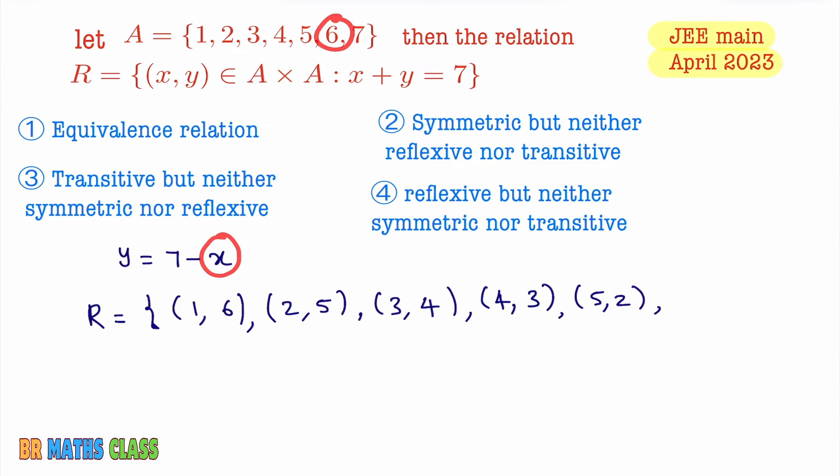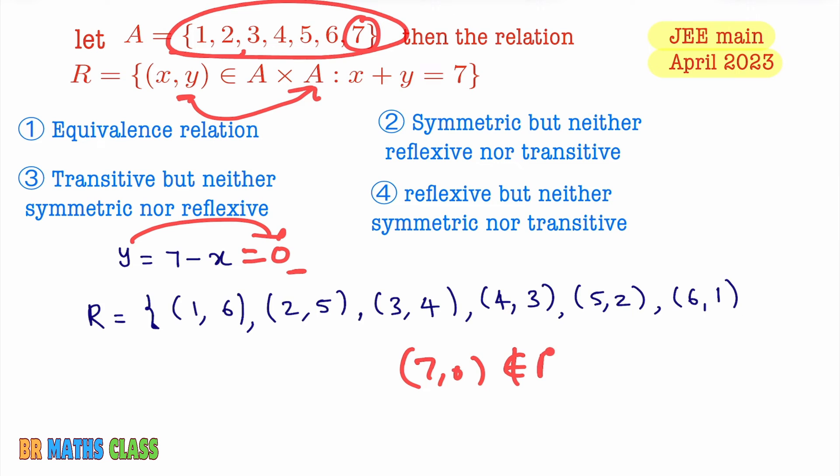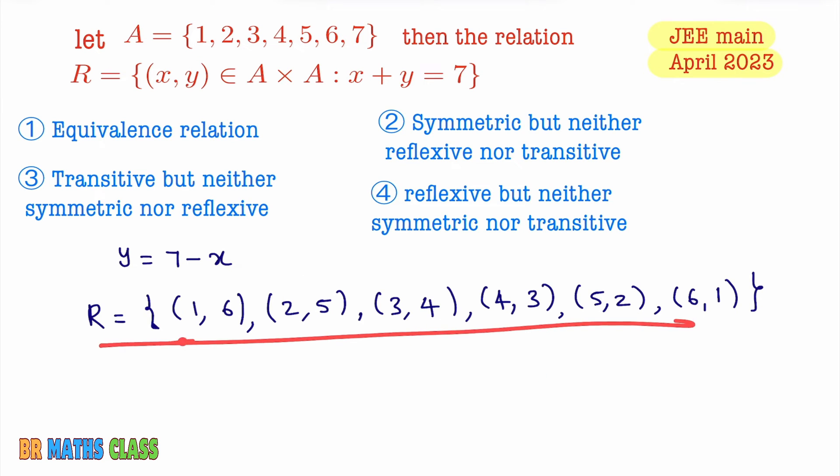Now you put x = 6. When x = 6, y = 7 - 6 = 1, so (6,1). If I put x = 7, 7 - 7 = 0, y = 0. But as Y is the element in set A, 0 is not in this. We cannot consider (7,0). (7,0) does not belong to the relation. So I written given relation in roster method.